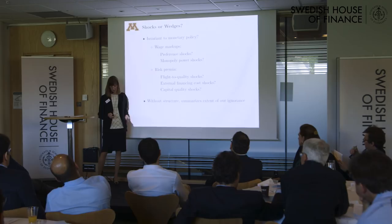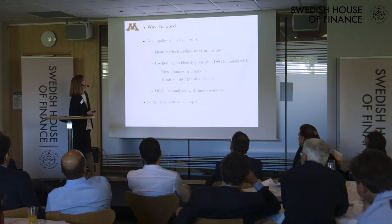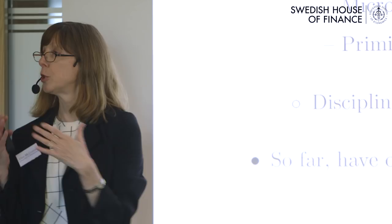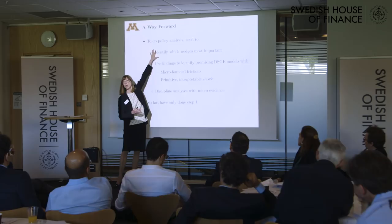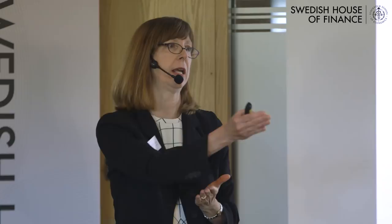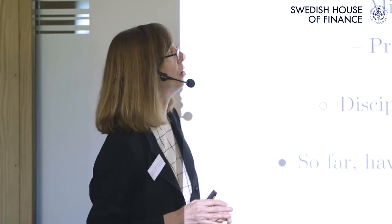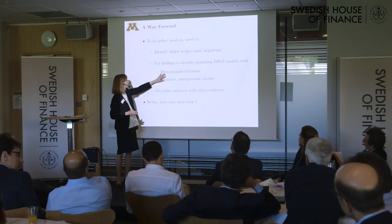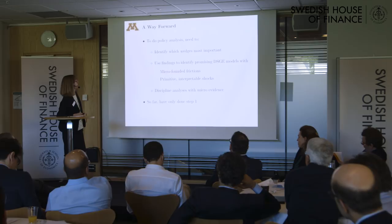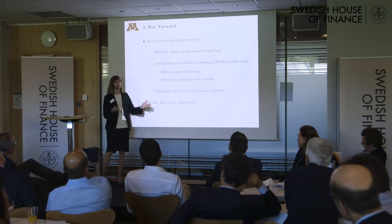A way forward: we could take the wedges that we have, which will help us point to promising structural DSGEs. That's step one, and it's an important step — I don't want to diminish it at all. But we need to identify the promising DSGEs with microfounded frictions and primitive, interpretable shocks. Then comes the super hard part, where we start going to microdata and really backing it up. I feel like we've only got the first part — people are doing this, but a lot's getting skipped.